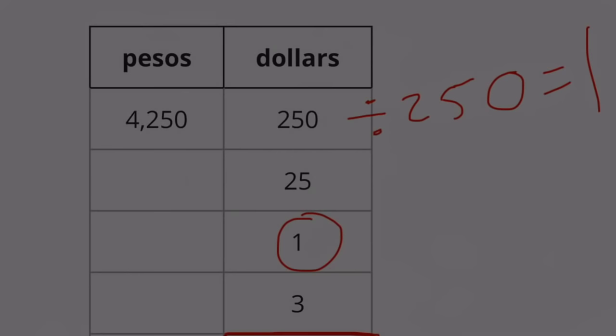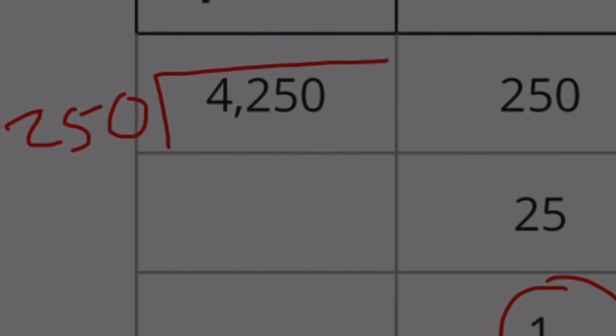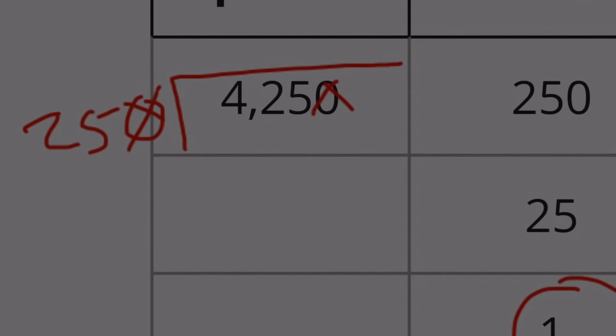And I need to divide 4,250 by 250. That's going to be the same as seeing how many times 25 goes into 425. How many times does 25 go into 42? It goes in once. Bring down the 5. How many times does 25 go into 175? I know 25 goes into 100 four times and 25 goes into 75 three times.